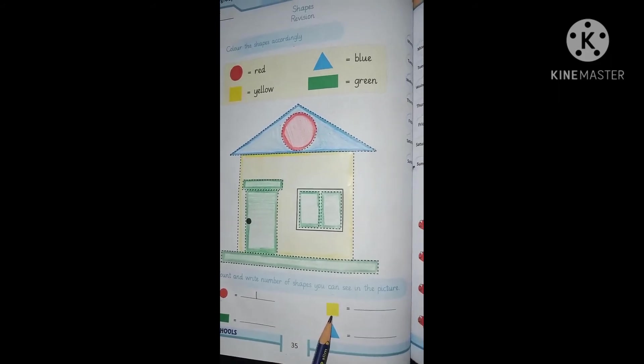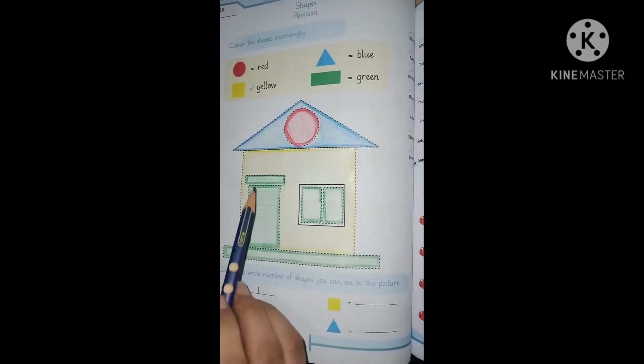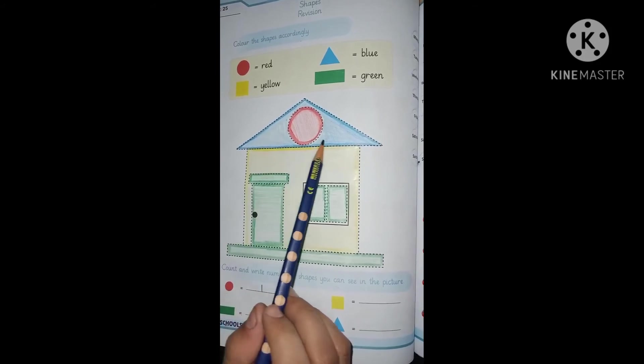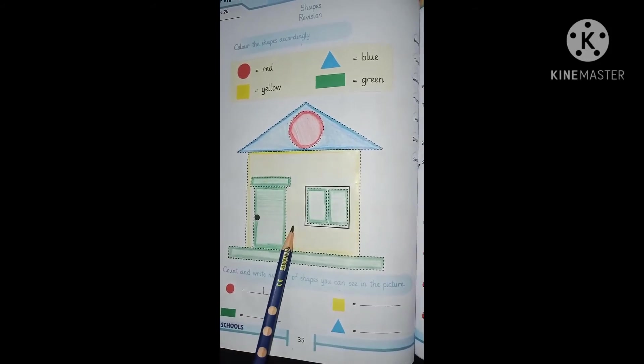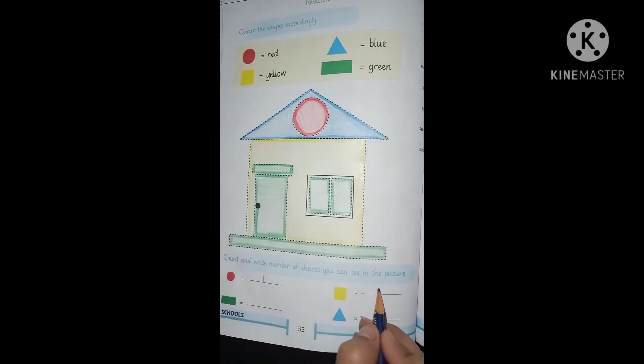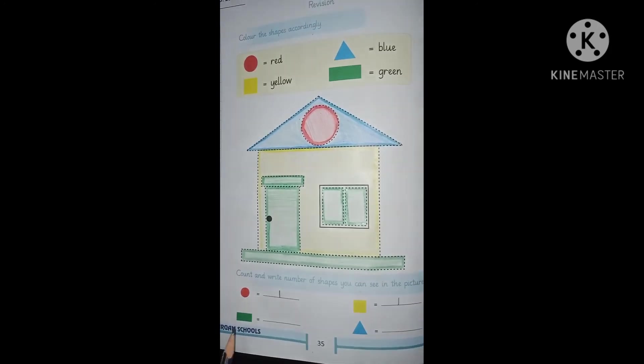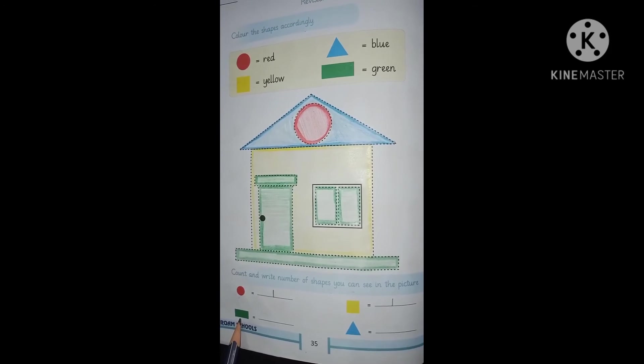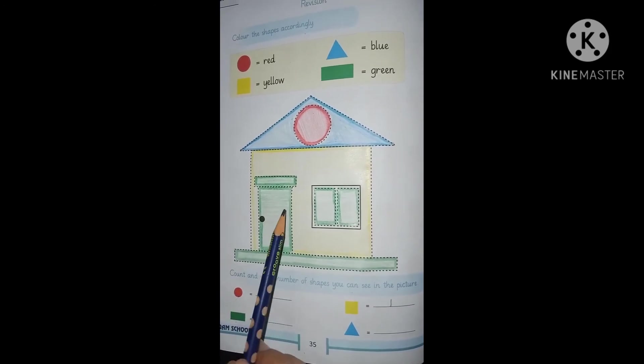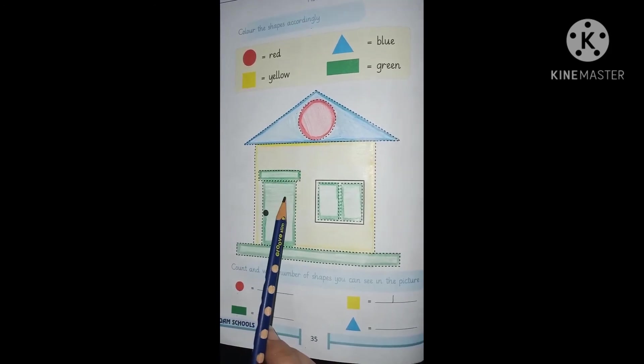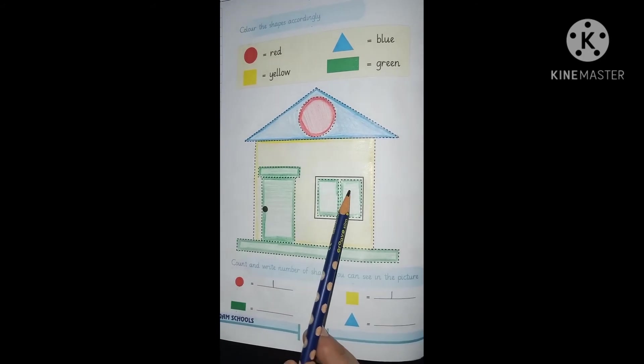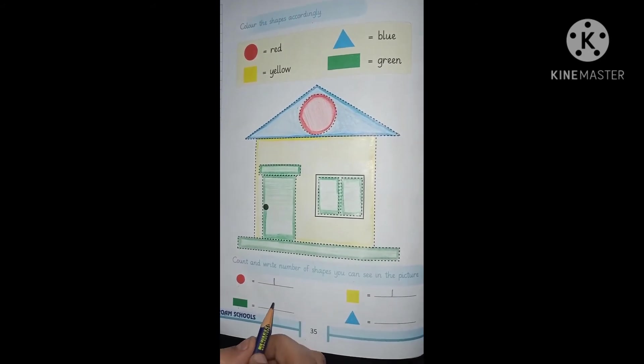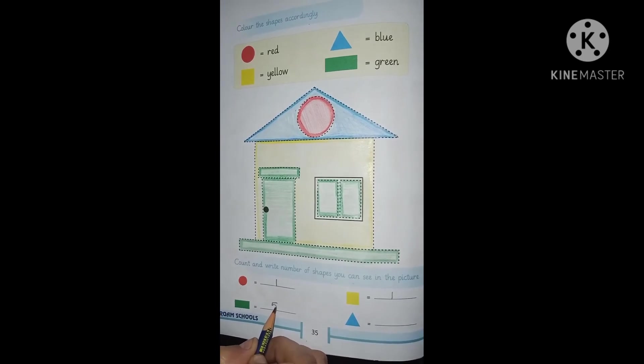Next shape is square. How many squares are there in this picture? Look at here. Yes, only one. So write here one. Which shape is this? It's rectangle. Now count how many rectangles are there. One, two, three, four, five. Five rectangles. So write here five.